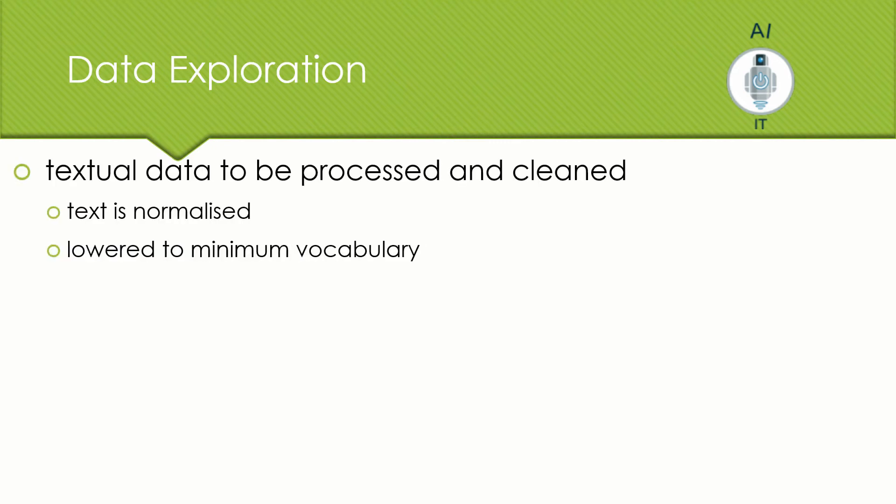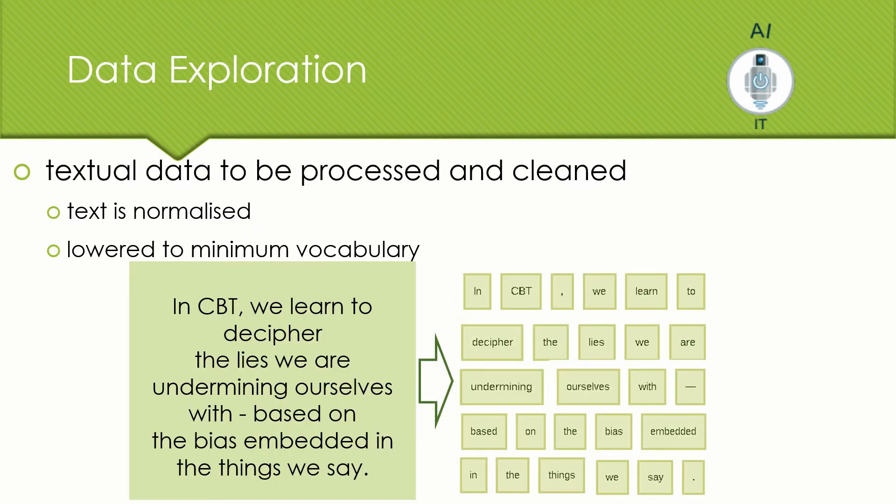We move on to the third stage of AI project cycle and that is your data exploration. How are we going to explore data in the NLP domain? Here, once you collect the data, you are going to process it and clean it. Here, we are going to minimize the vocabulary and normalize the text. This way, you tend to explore data. For example, if you have a lengthy sentence, you are going to break it down into words and from that you are going to take only the meaningful words. This is how we explore data in NLP domain in the third stage of AI project cycle.